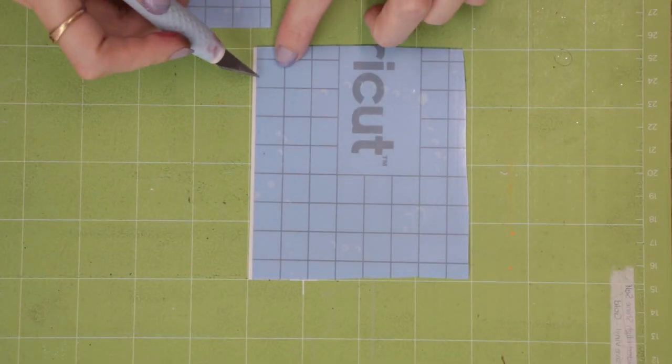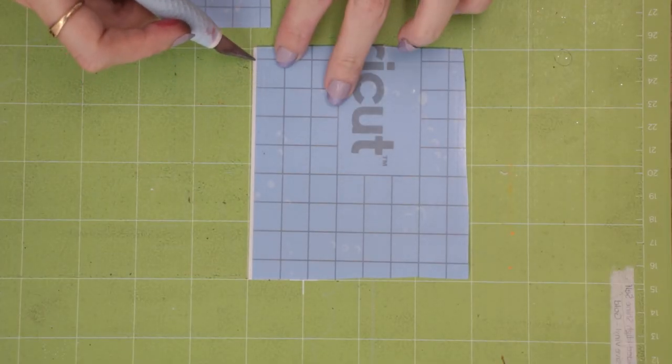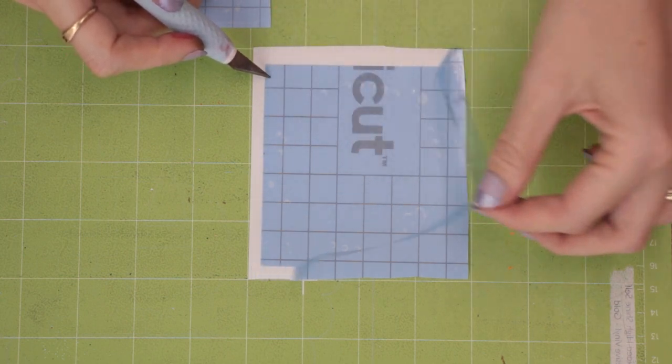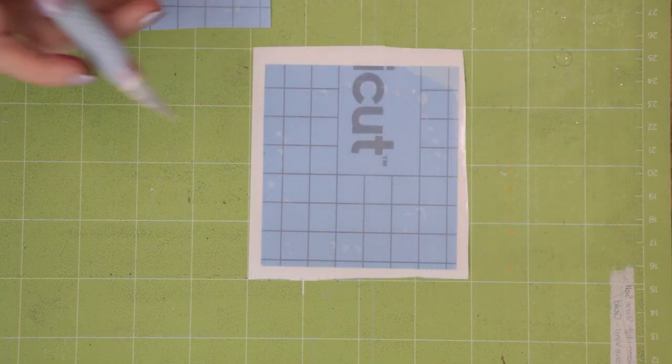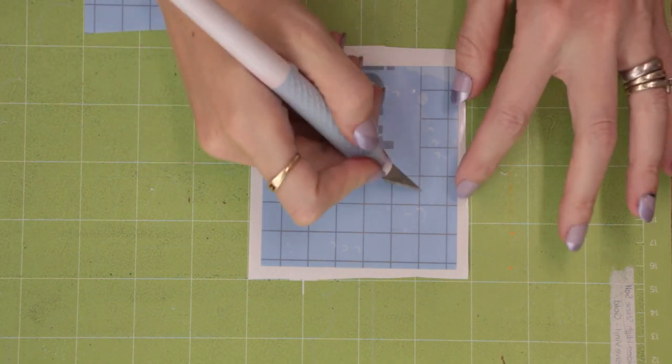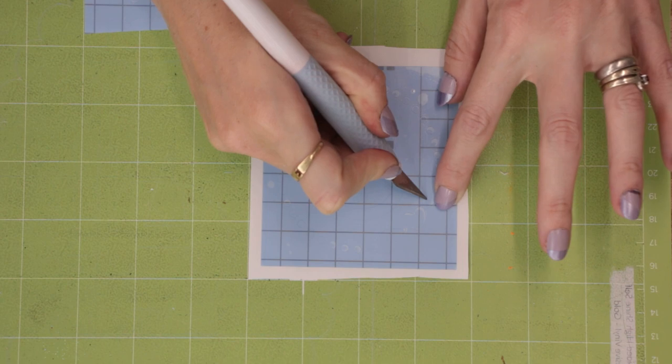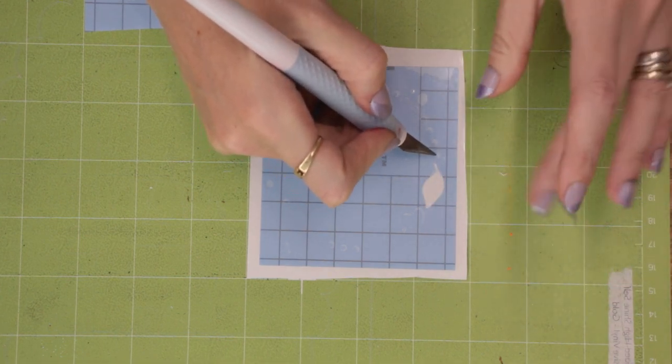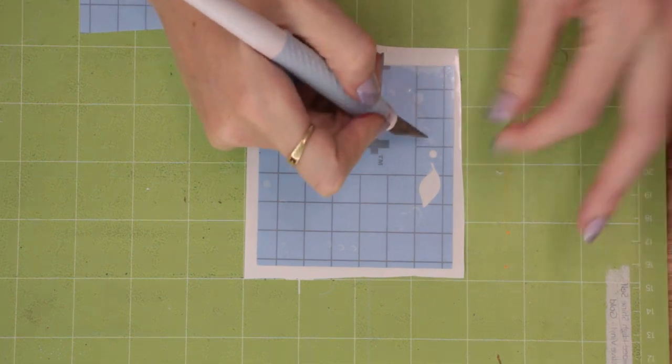So the first thing we want to do is remove the outer area so we're going to reveal our square or our rectangle. With stencils you want to actually remove the design, so normally we would remove around the design but with a stencil it's the design itself that you're removing.